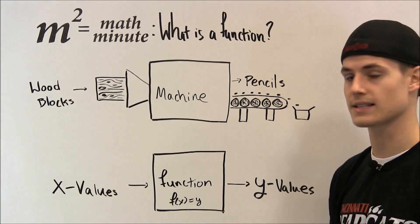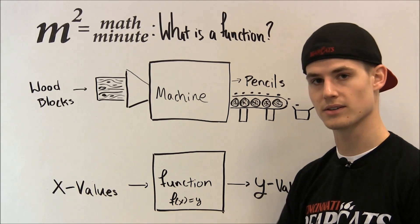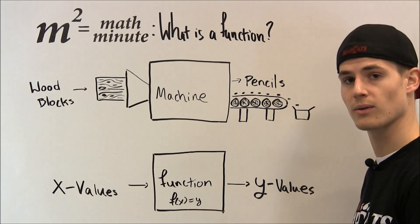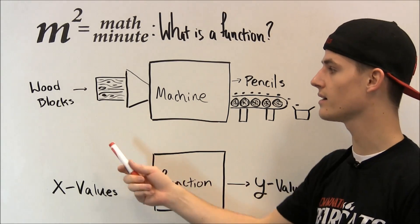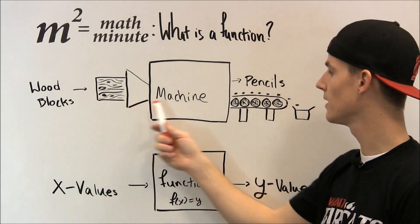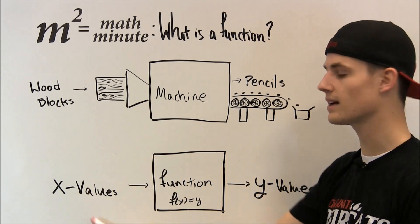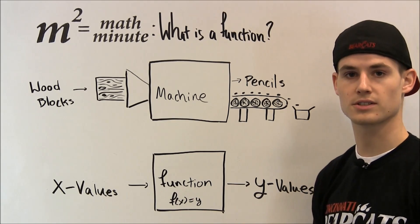Down here is a perfect example. We have these x values, we're going to plug them into our function, our function is going to act on it, and it's going to put out a y value. Very similar to here, our x value was wood blocks, and we got pencils out of it. So this is just a general case, and we're going to be using this idea to talk about functions in general.